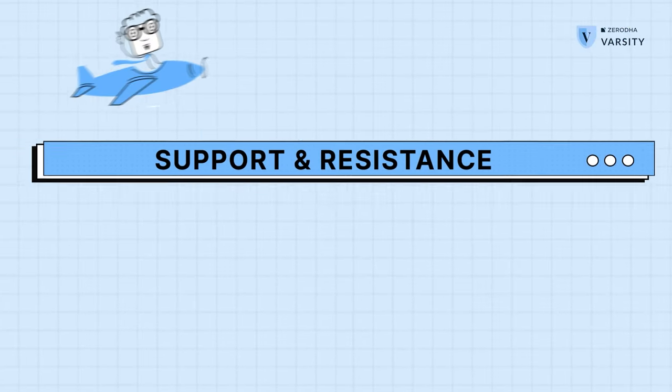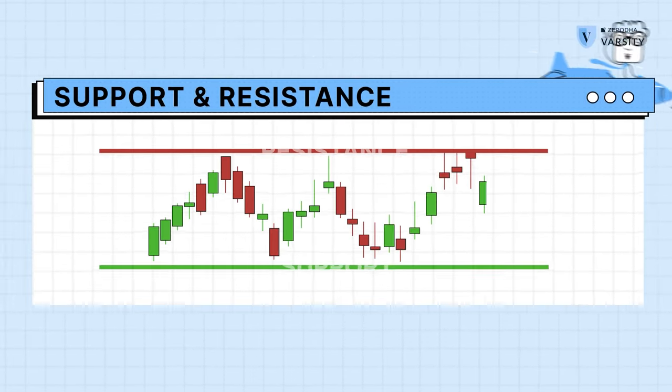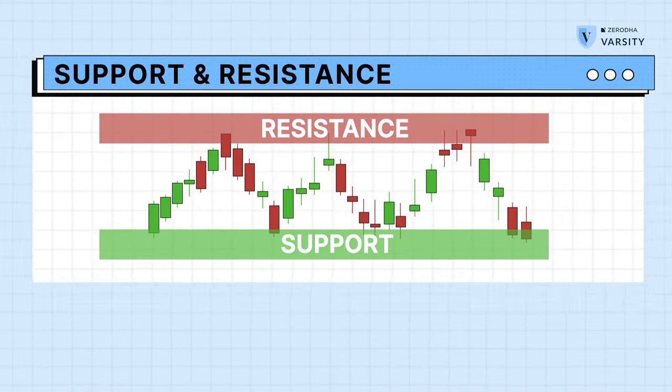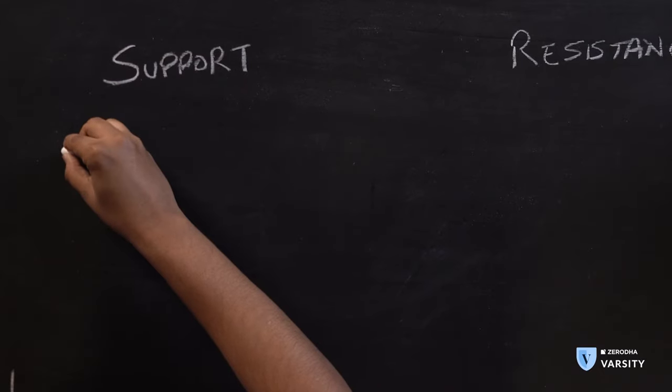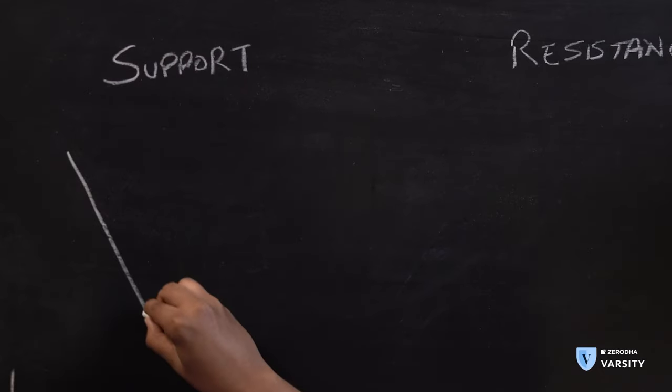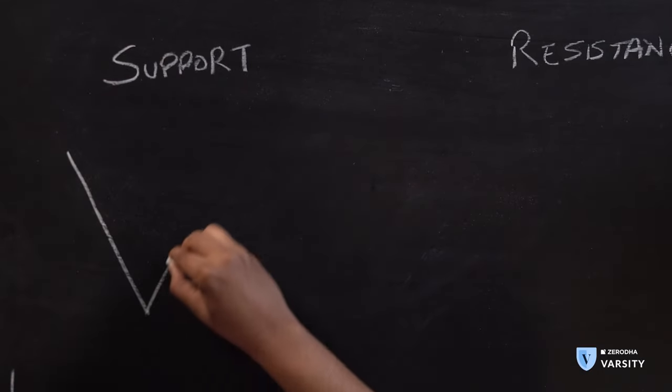Support and resistances are zones on a price chart which have excessive buying and selling relative to the price movement before it. Let me show you. Let's suppose that the market was falling down and at some point the market recovered. We don't need to look at candlestick charts for this — let's just stick to a line chart and understand what support is.